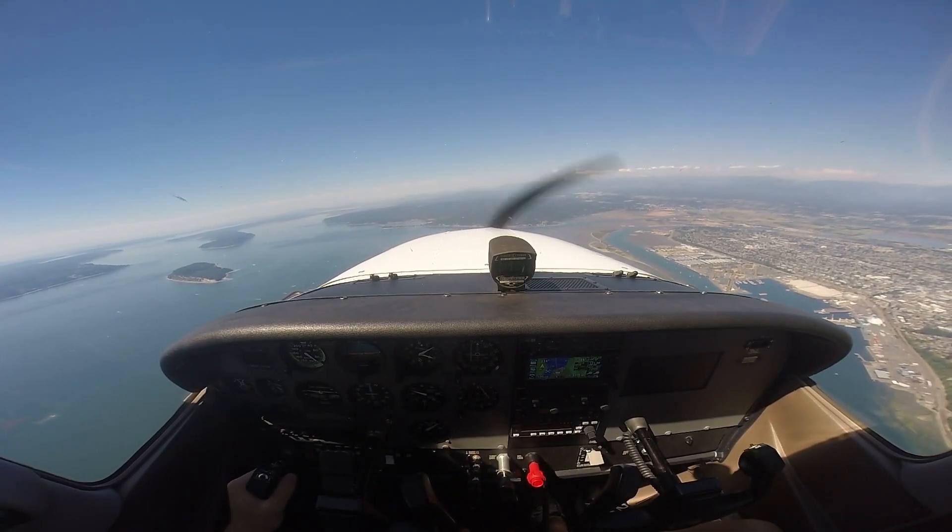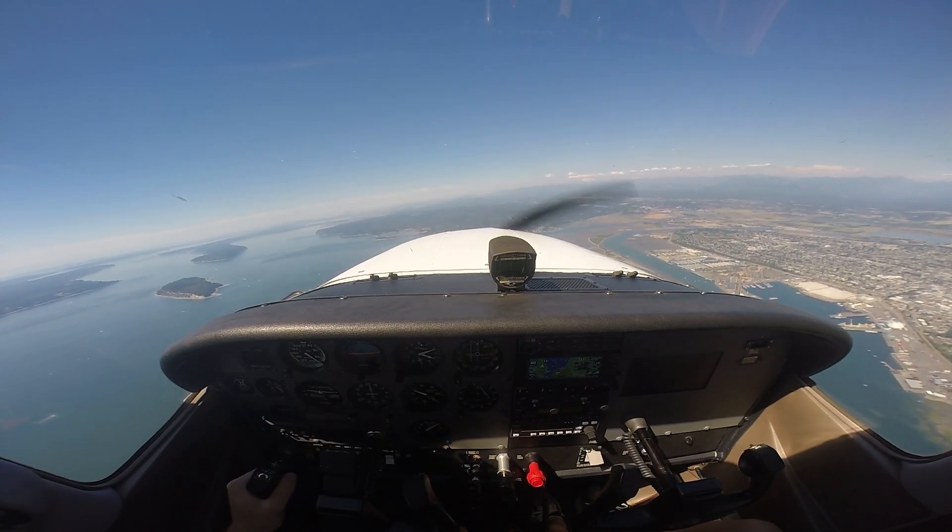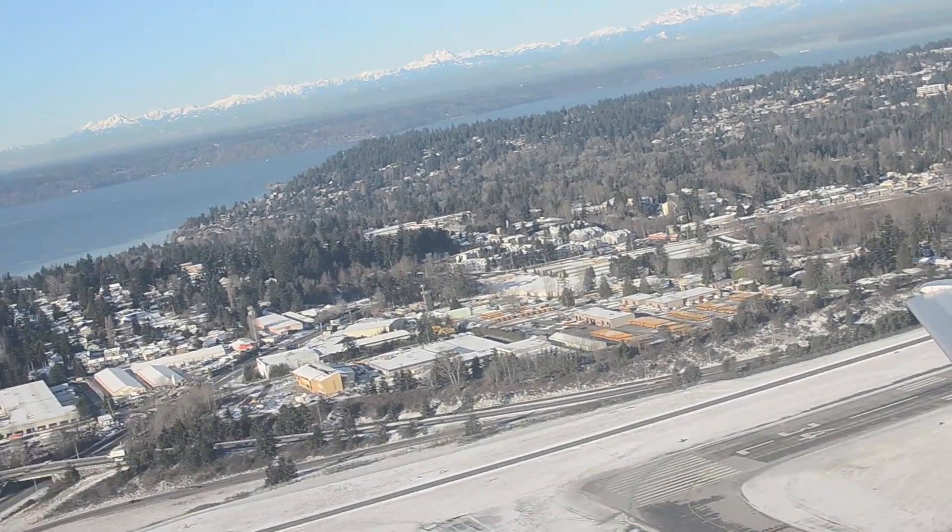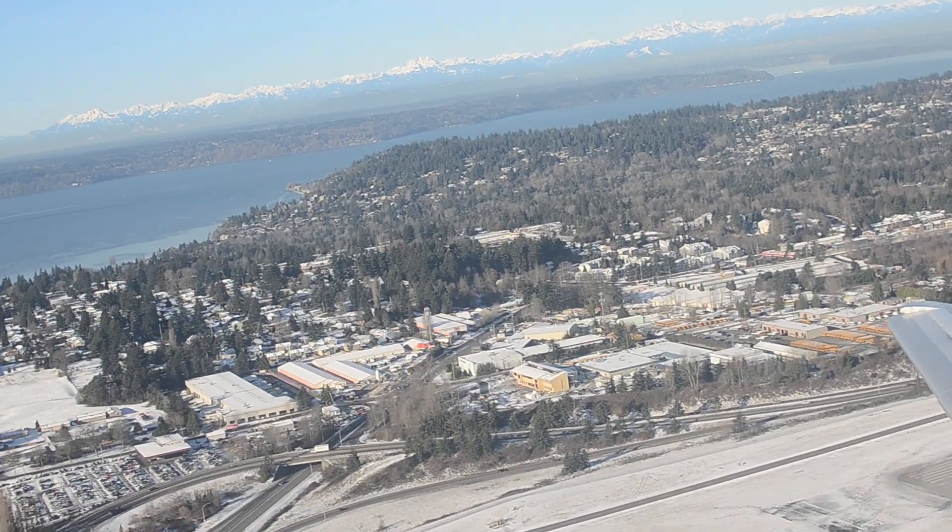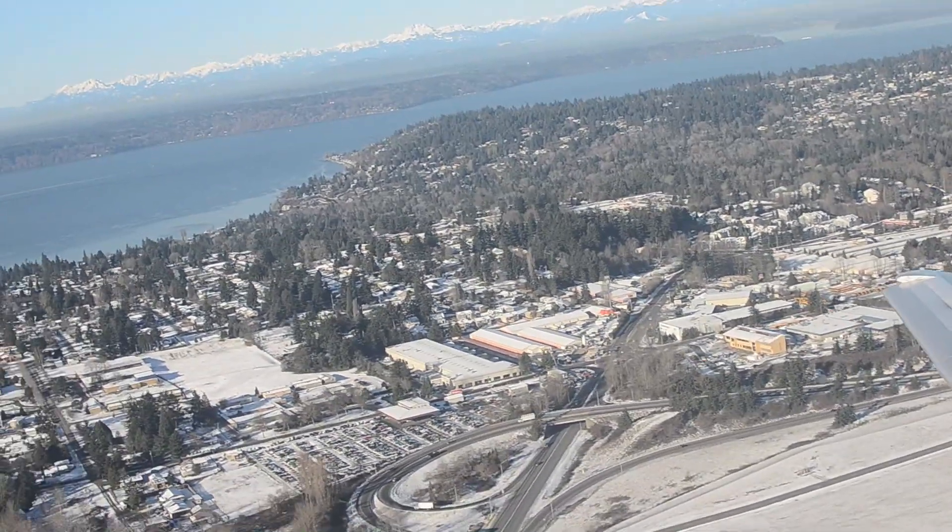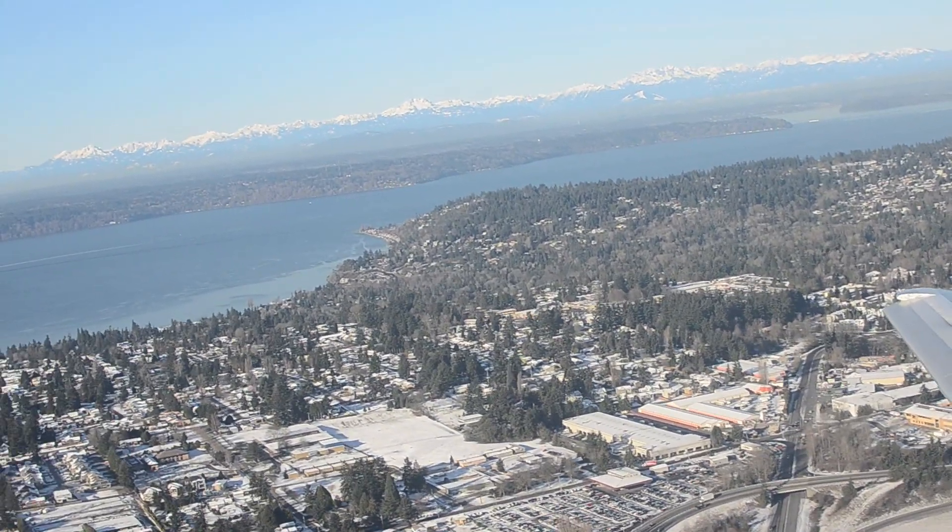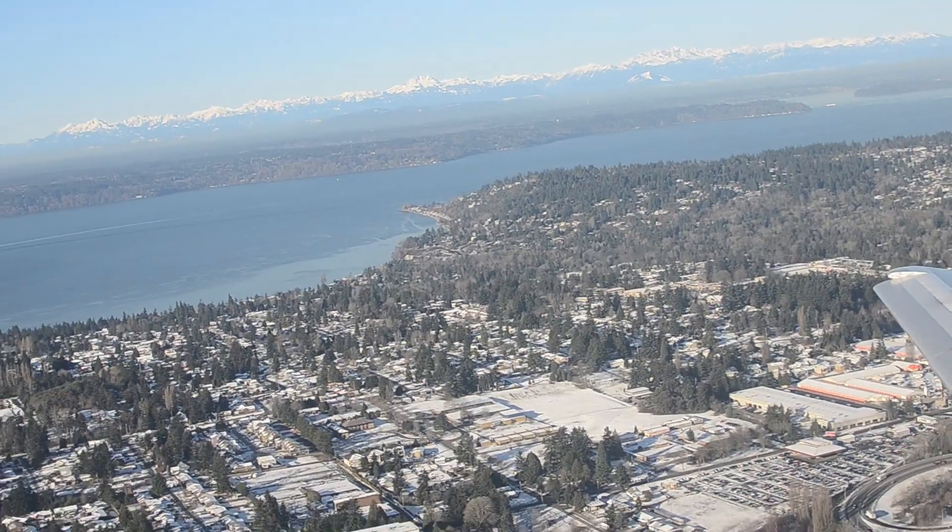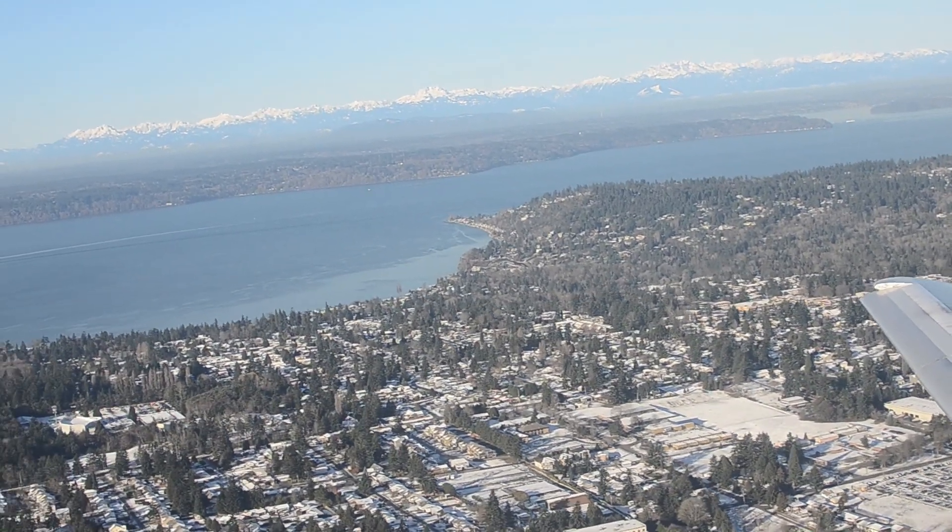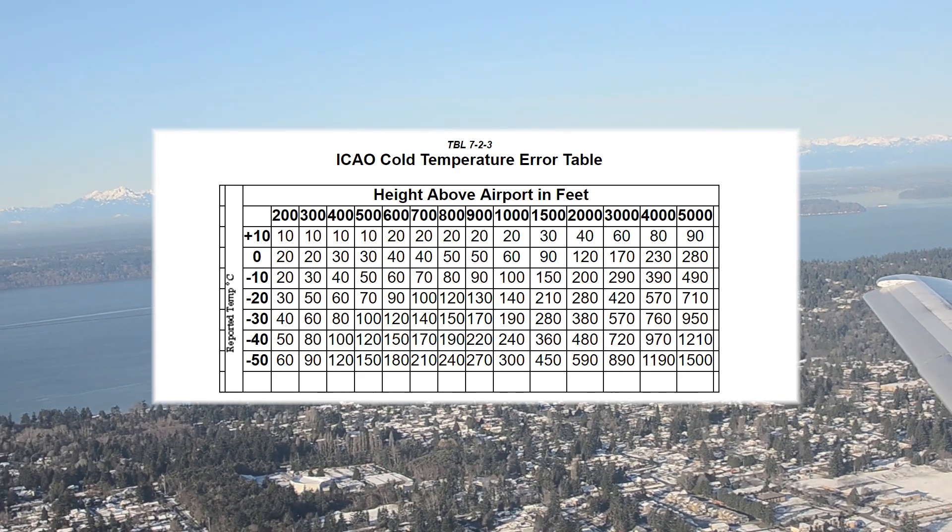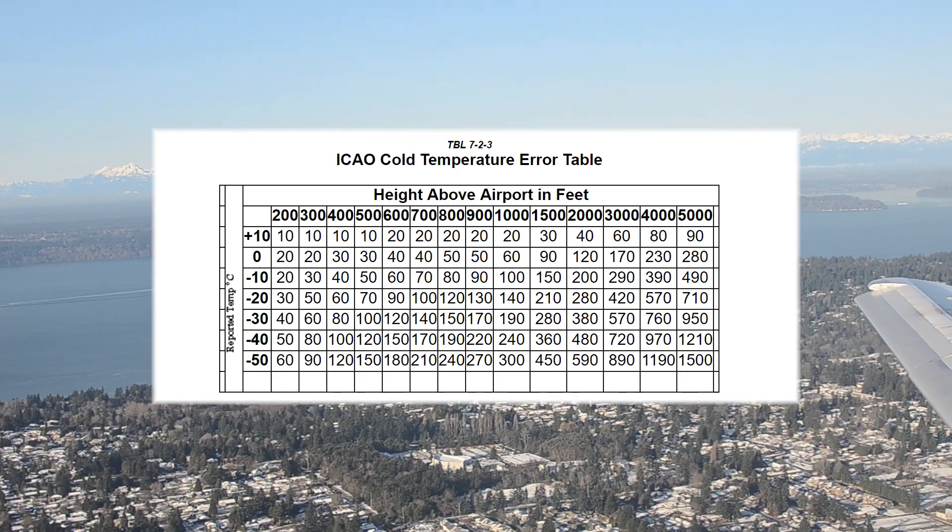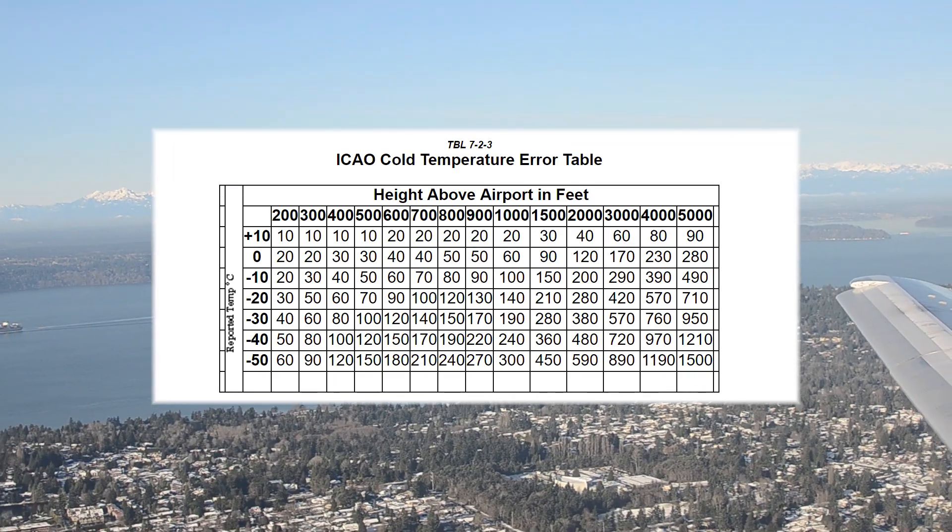Do know that these pressure differences are fairly minuscule except for flying in very cold temperatures. Under moderate conditions, you should be able to maintain an altitude above the ground that is far greater than any error induced by non-standard temperature or pressure on the altimeter. The ICAO has published a standard cold temperature correction table if you're curious about the magnitude of this error.